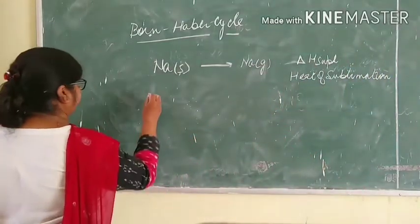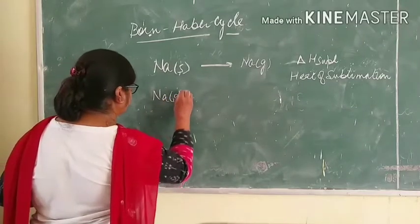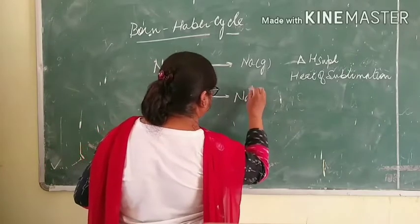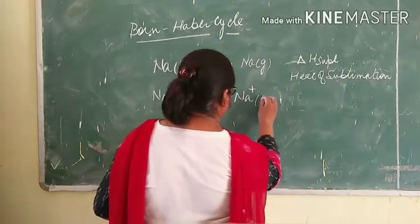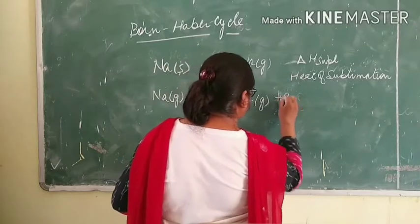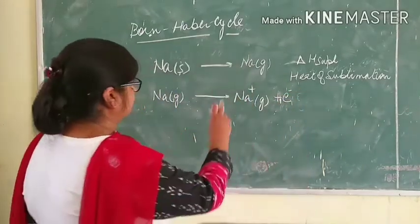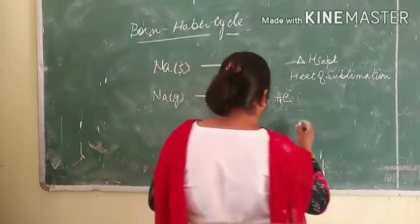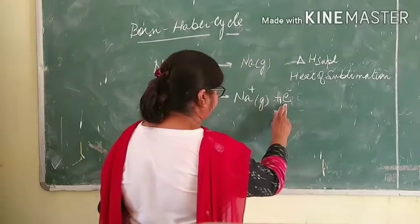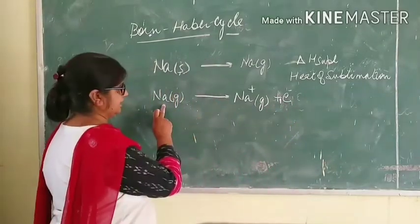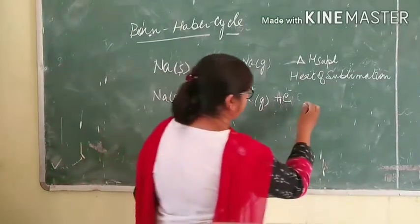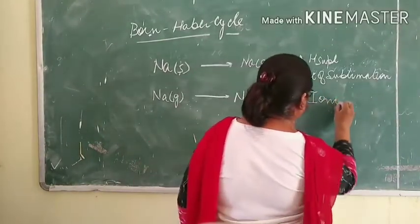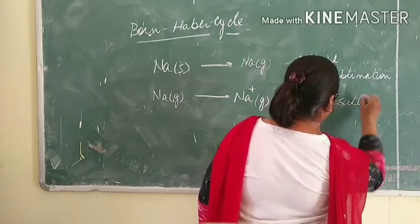Next, the ionization potential. Sodium in the gaseous state changes to the sodium plus one ion — that is, an electron is removed and a sodium ion is formed. The amount of energy required to remove this electron from the sodium gaseous atom is known as the ionization potential.